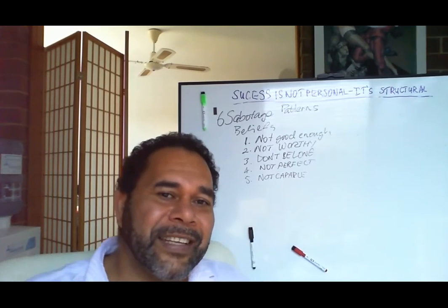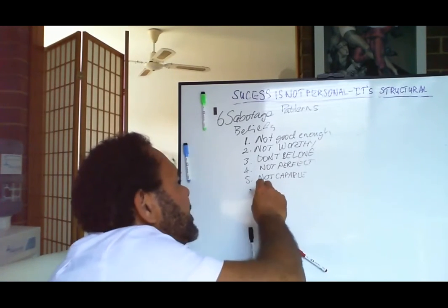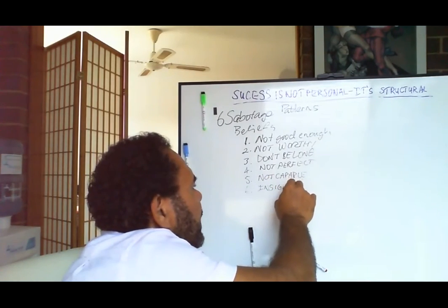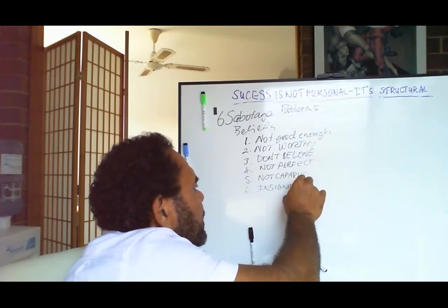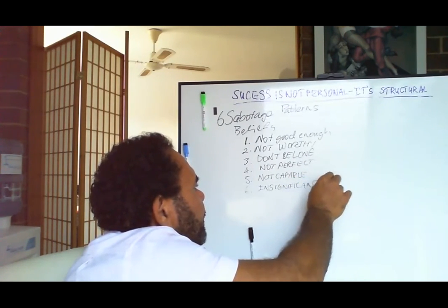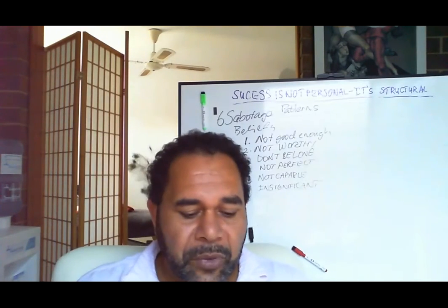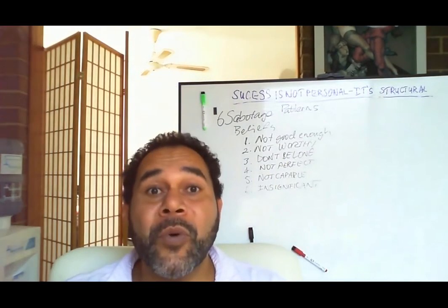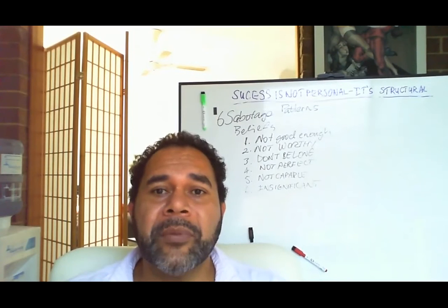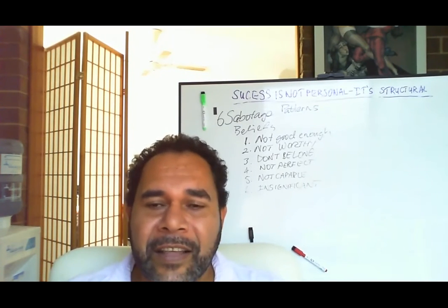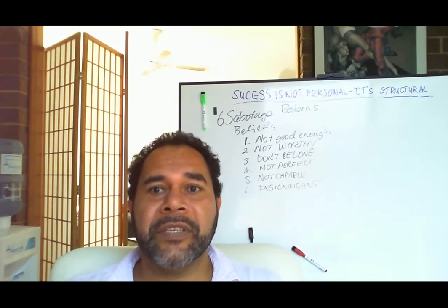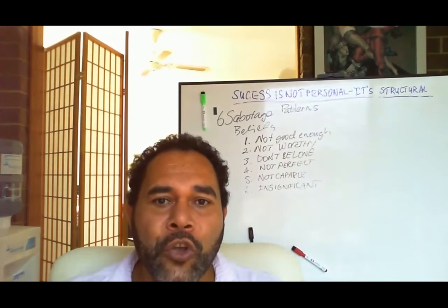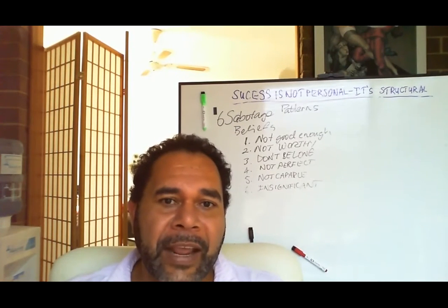The sixth is 'I am insignificant — I don't count.' This person is always trying to be visible and seen. They feel overlooked and believe that if they get seen, they'll be significant, and then they'll be handed what they want. So they go to be seen or known, waiting for things to be handed to them.